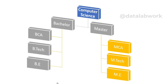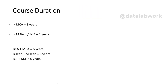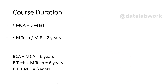Moving on to postgraduate programs, let's contrast MCA with MTech/ME in computer science. MCA — Master of Computer Applications — is a three-year postgraduate degree focused on software development and application, covering programming, database management, networking, and web development. MTech/ME in computer science, on the other hand, is a two-year postgraduate program that is more research-focused, providing an in-depth understanding of algorithms, computation, programming languages, software, hardware, and more. The difference in duration reflects their focus: MCA allows more detailed exploration, while MTech/ME is concentrated and research intensive.